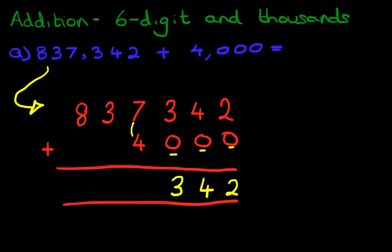And the thousands, we're going to do seven plus four is, that's right, it's eleven. So we put one here, and we put one here.